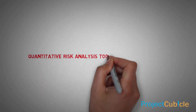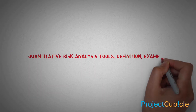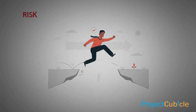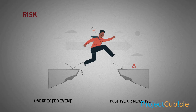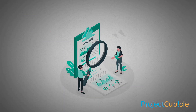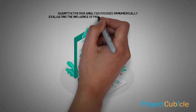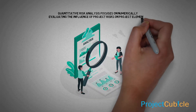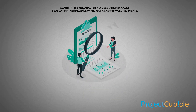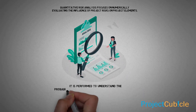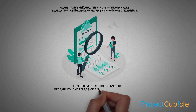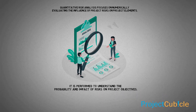Quantitative risk analysis tools: definition and examples. Risk is any unexpected event that has the potential to affect the project goals, either positive or negative. Quantitative risk analysis focuses on numerically evaluating the influence of project risks on project elements. It is performed to understand the probability and impact of risks on project objectives.